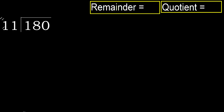180 divided by 11. 1 is less, therefore next. 18 is not less, therefore work with 18. 11 multiplied by which number is nearest to 18, but not greater?